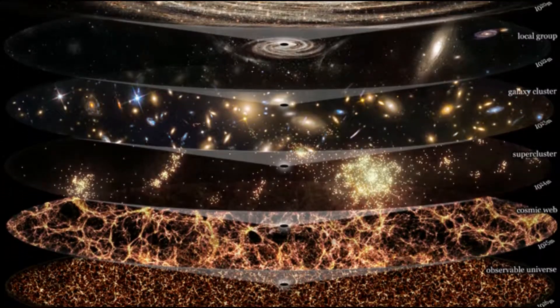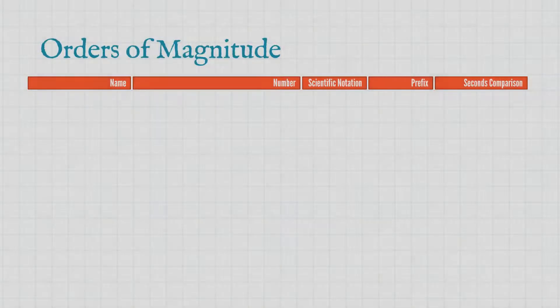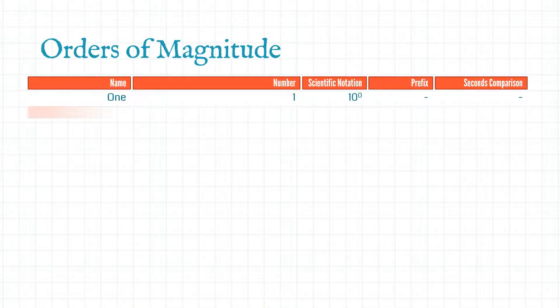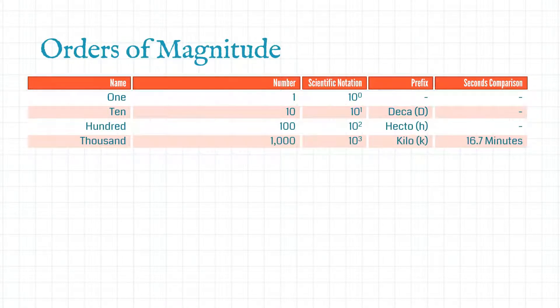For the purposes of this video we're going to be using the short scale. So in base 10 we go one, ten, one hundred, one thousand. Pretty easy so far and well within our grasp of understanding. We're going to be using examples in seconds to try and get our heads around things a bit more. So the first example we've got here is a thousand seconds which is 16.7 minutes.